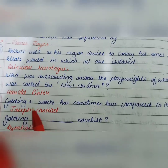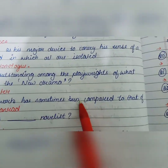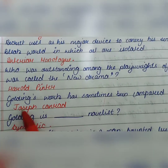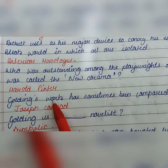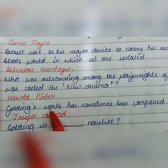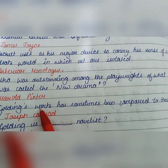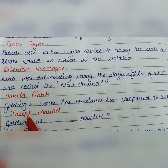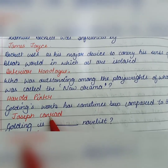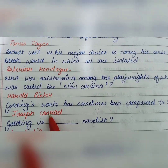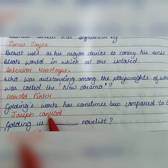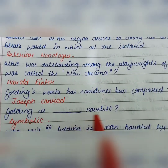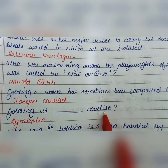Golding, who is very famous for Lord of the Flies, has sometimes been compared to Joseph Conrad — who is famous for Heart of Darkness and other postcolonial works.